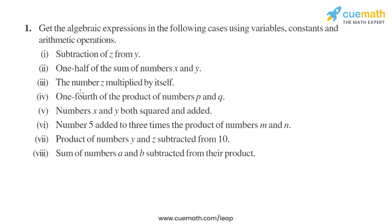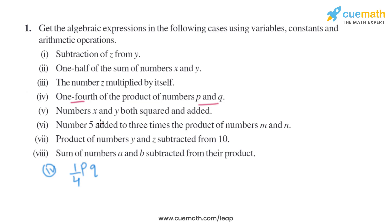Now let's move on to the fourth part: one fourth of the product of p and q. The product of p and q can be written as pq, and one fourth means one over four, giving us pq over 4.